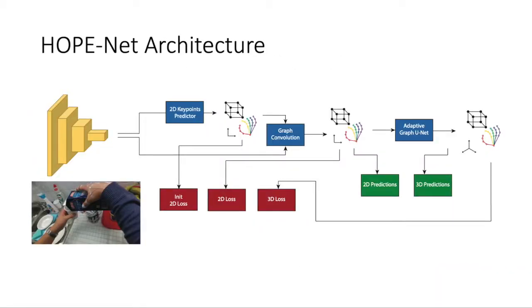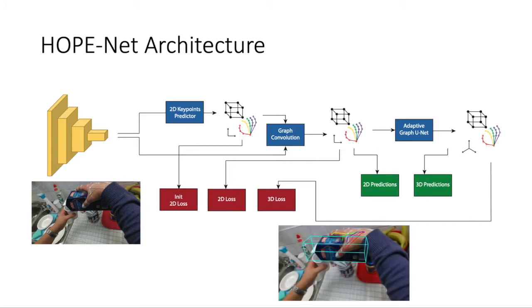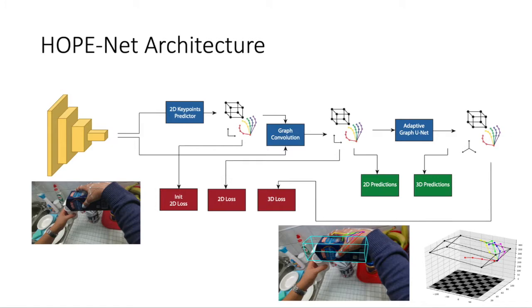The HOPE-Net model uses lightweight ResNet-10 as image encoder, followed by a three-layered graph convolutional neural network to refine the initial estimated 2D coordinates and our adaptive graph unit to convert 2D coordinates to 3D coordinates.